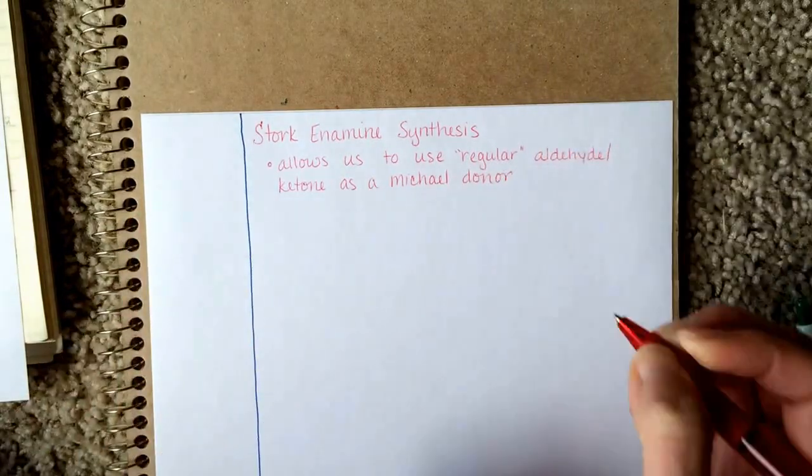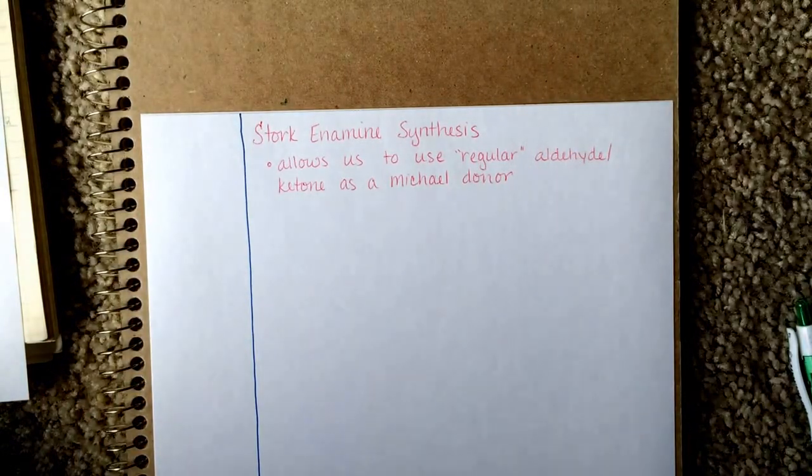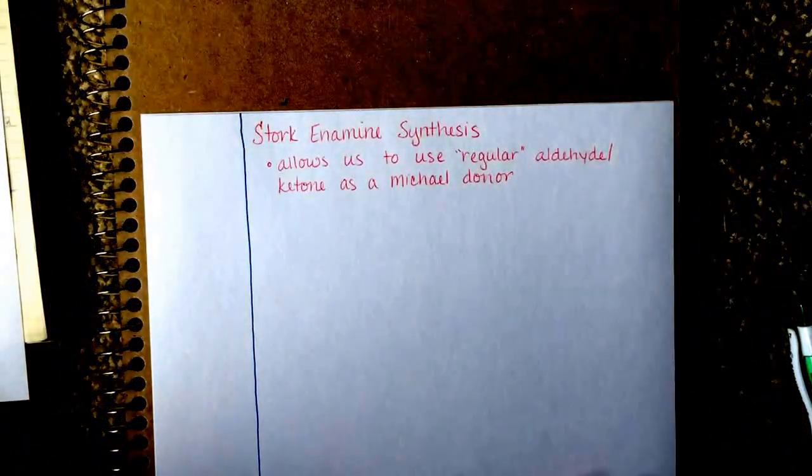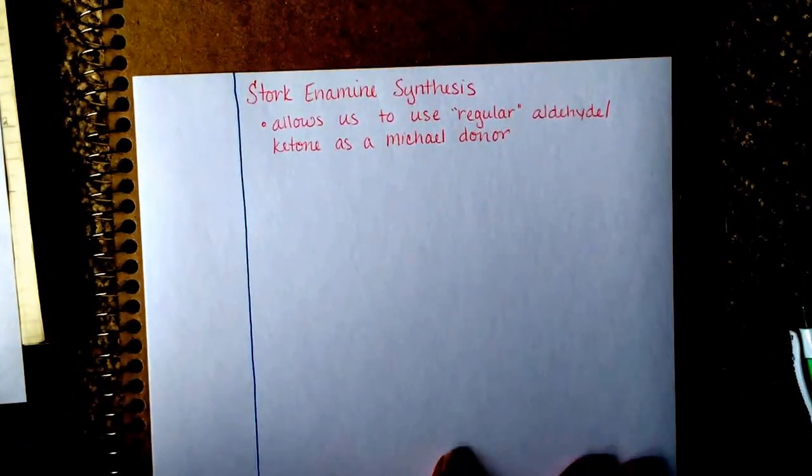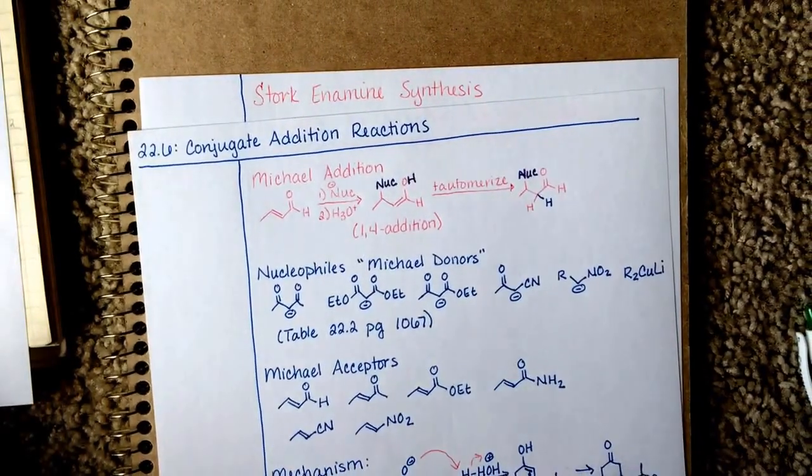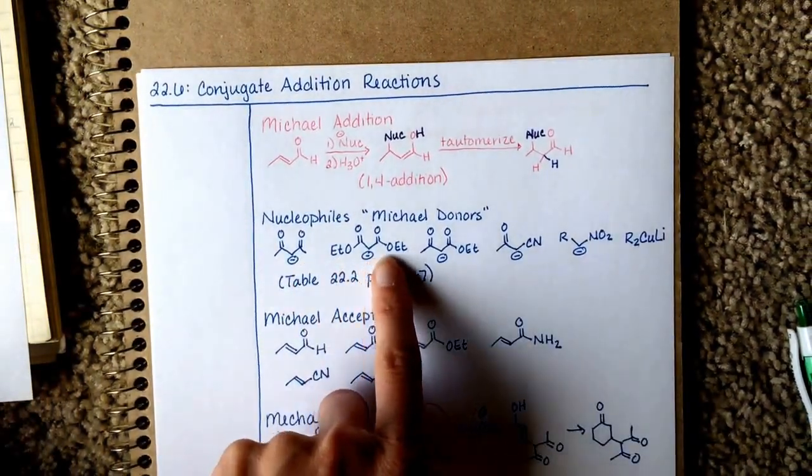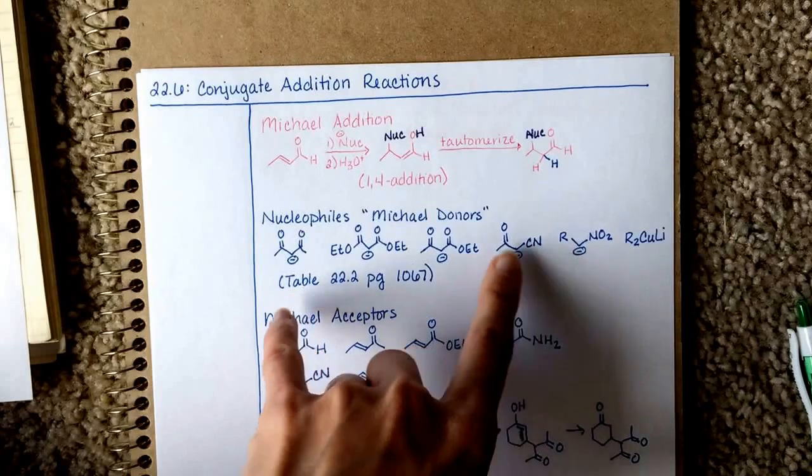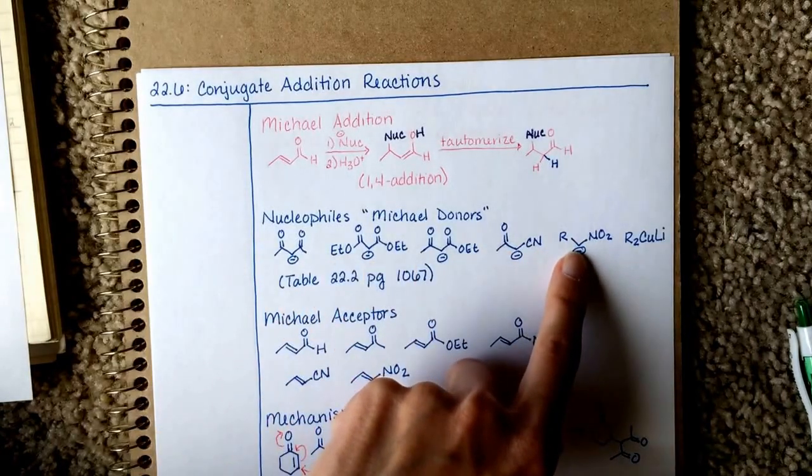That's kind of a tricky way for me to say that, because we really don't use an aldehyde or ketone as a Michael donor. Let's look back at the Michael Addition reaction. The Michael donors are enolates of some sort of carbonyl compound. None of them are enolates of aldehydes or ketones.